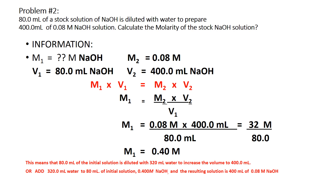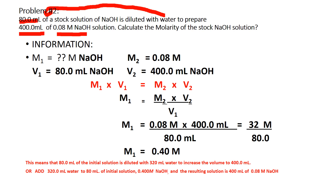Problem 2: 80 mL of a stock solution of sodium hydroxide is diluted with water — meaning water is added to this 80 mL of stock solution — and after adding that water the volume becomes 400 mL with a concentration of 0.08 molar NaOH. Calculate the molarity of the stock solution, M1. M1 is unknown, M2 is 0.08 molar, and V2 is 400 mL.